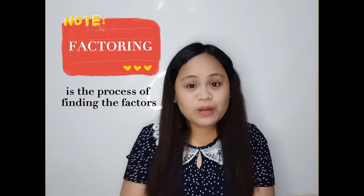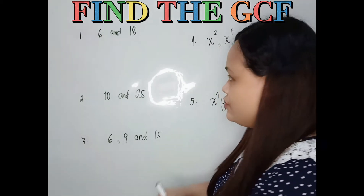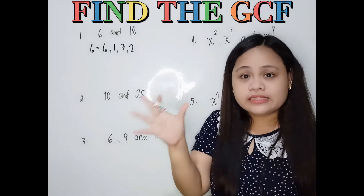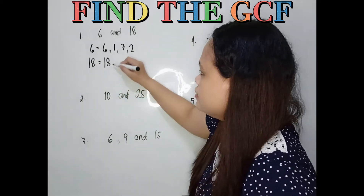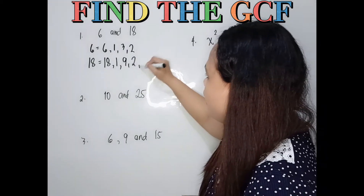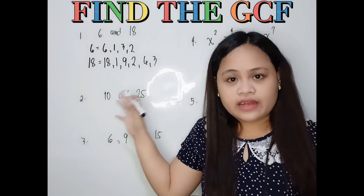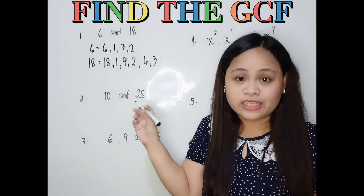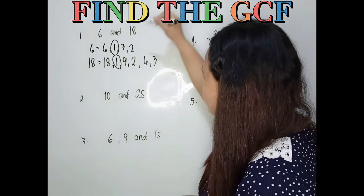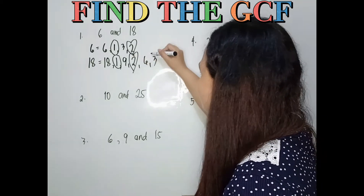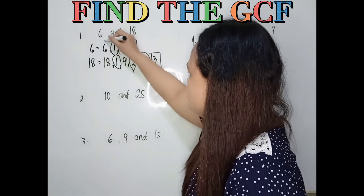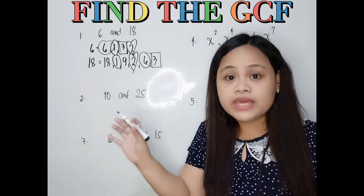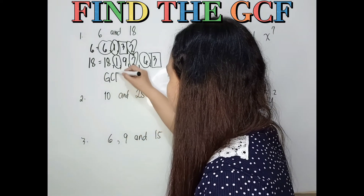So let's find the GCF of the given numbers. Let's have 6 and 18. What are the factors of 6? We have 6 times 1 and 3 times 2. For 18, we have 18 times 1, 9 times 2, and 6 times 3. After you list all the factors, you can now find the common factors — the numbers that both have in common. We have 1, 2, 3, and 6 as common factors. But we need the greatest common factor, so the GCF is 6.